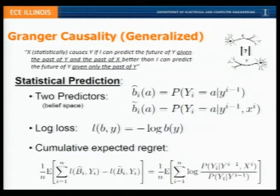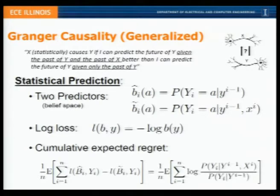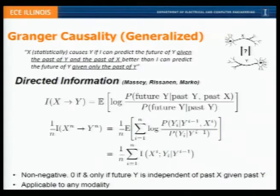If we look at the cumulative expected regret - how much the predictor who only used the past of Y regrets not having also used the past of X in prediction - we can write it as the expected value of a sum of log likelihood ratios on the conditional distributions, conditioning on the past of Y and the past of X compared to just the past of Y alone. This quantity is an information theoretic quantity known as directed information, which can be written in terms of the sum of mutual information.